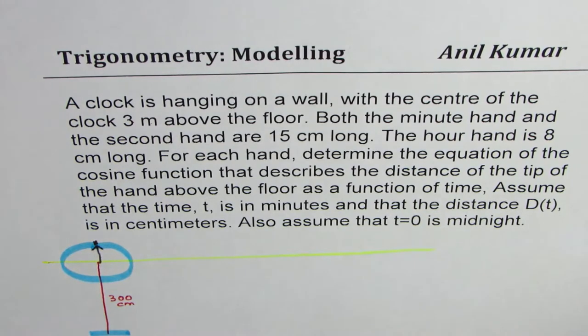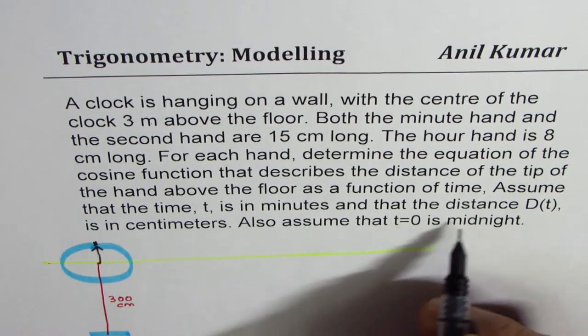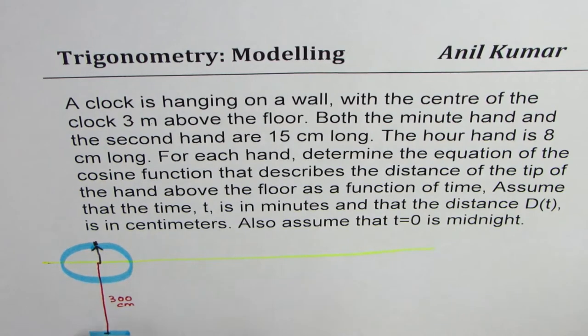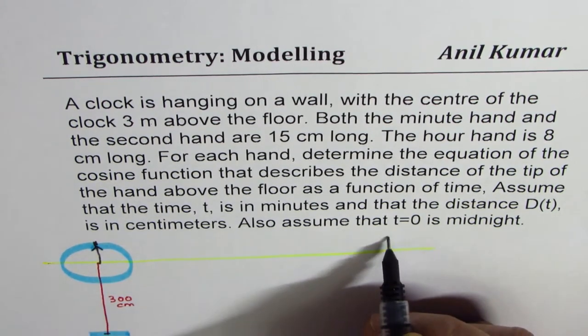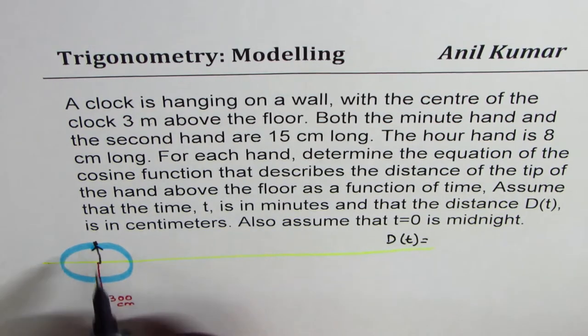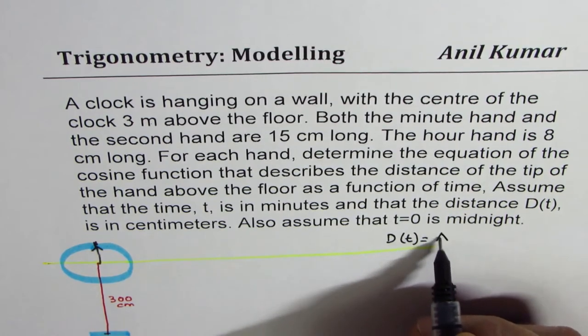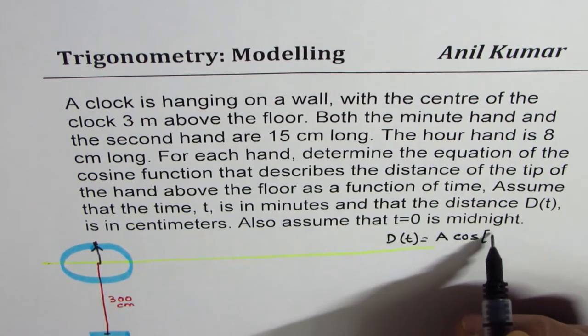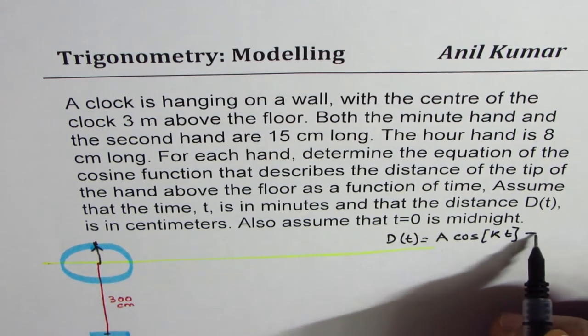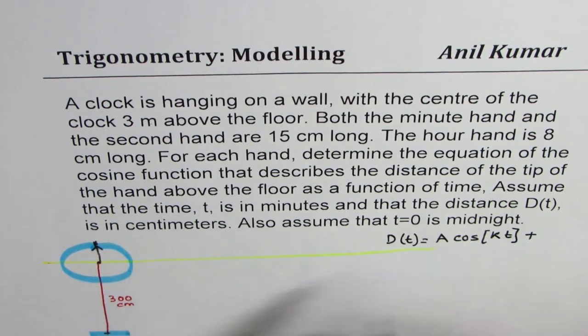Now to write any cosine function in this situation, what we need to know is that the cosine function could be written as for the distance d. So distance d is from the ground to the tip. So for the distance d to the tip, since we are starting from a maximum, the phase shift is 0. So we will start with amplitude A, cos of k, phase shift is 0, so k times t, plus how high the center is, which is 300.